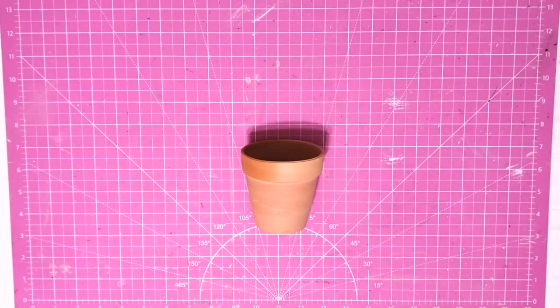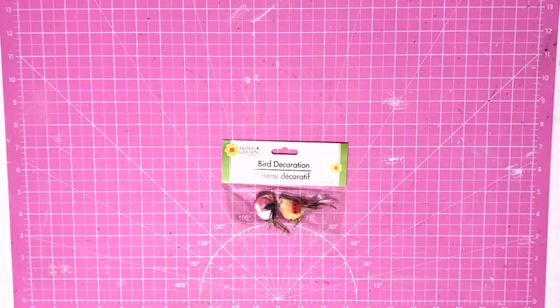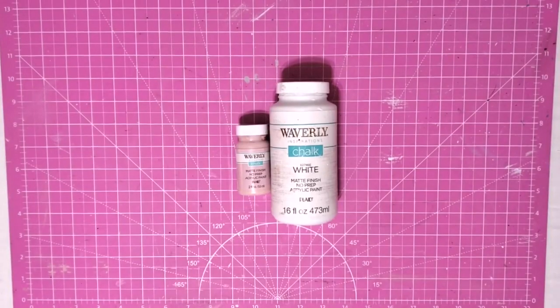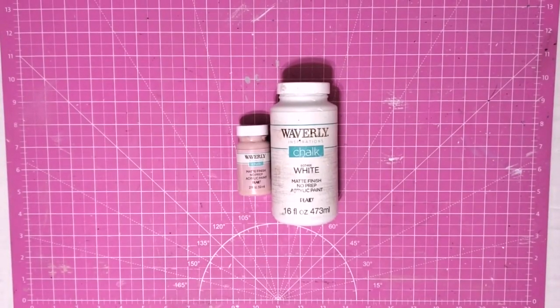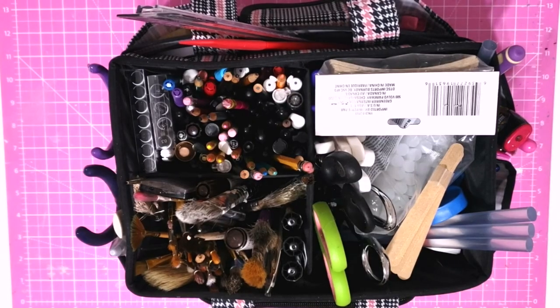Hey y'all it's Trish. For this project we're going to use one of these little Dollar Tree terracotta pots. These are the larger ones that come two to a pack, a terracotta saucer, one of these little birds, some florals, some chalk paint in ballet slipper pink and white, my glue gun and some glue sticks and some tools from my work caddy.